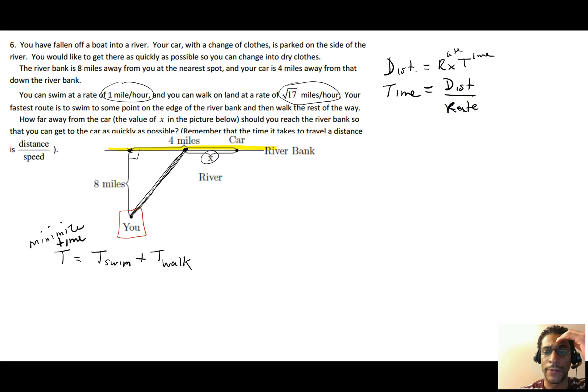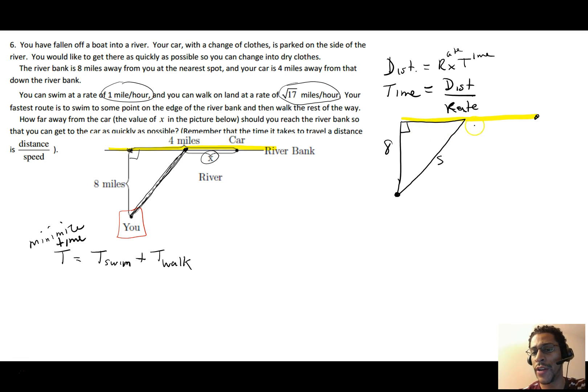You can swim at a rate of 1 mile an hour and you can walk at a rate of square root of 17 miles an hour. A strange number, but it's there to make the problem come out to be nice integer answers. From that point on the shore, directly north of you, your car is 4 miles away. Distance is equal to rate times time. So time is going to be equal to distance over rate. So the time for the swim will be the distance that you swim divided by the rate of swim.